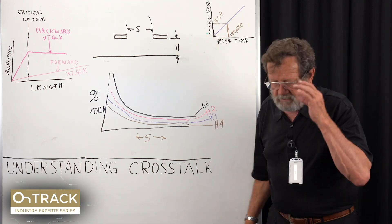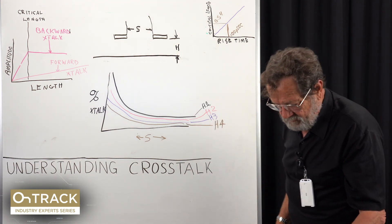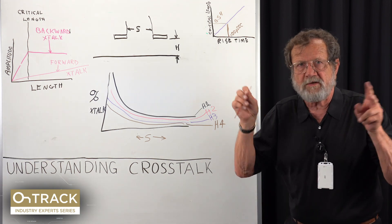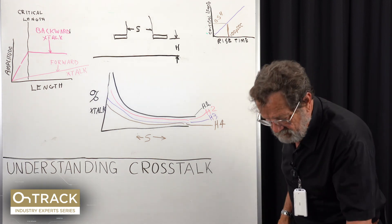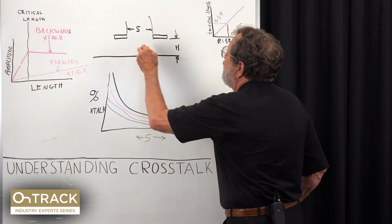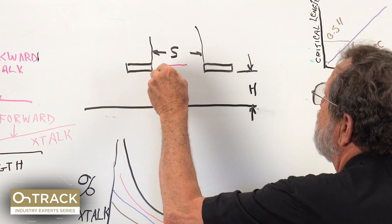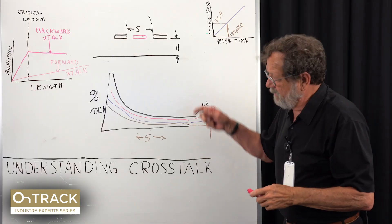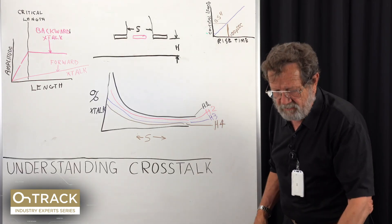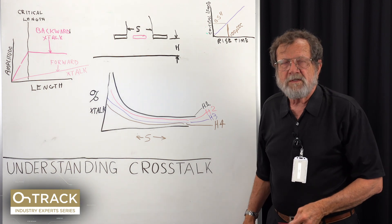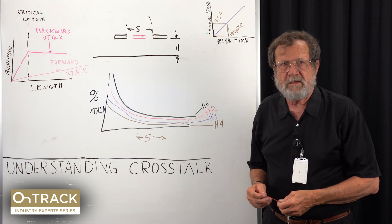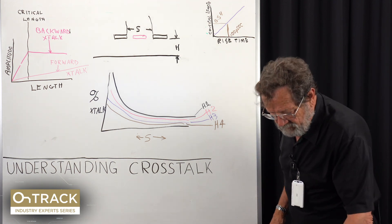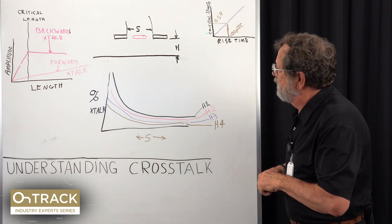One thing I might do is put in a guard trace, which means inserting another trace in there, periodically hooking it to ground, hoping that will cause crosstalk to go away. Well, it doesn't really, so I'll put some numbers on this right now for one case.